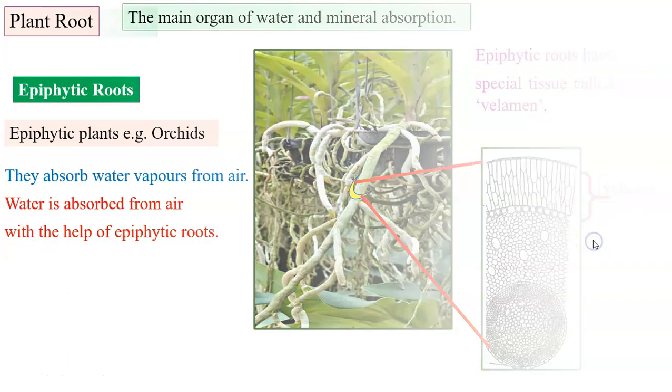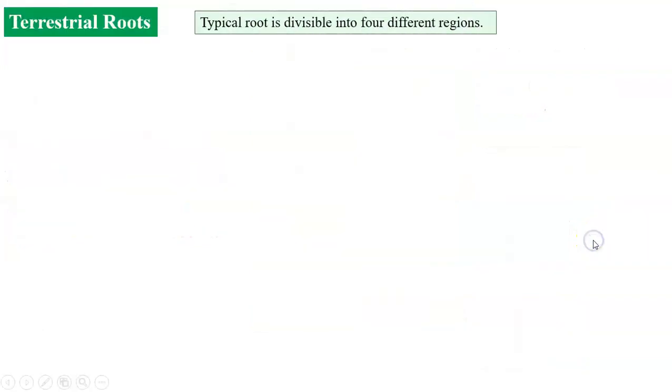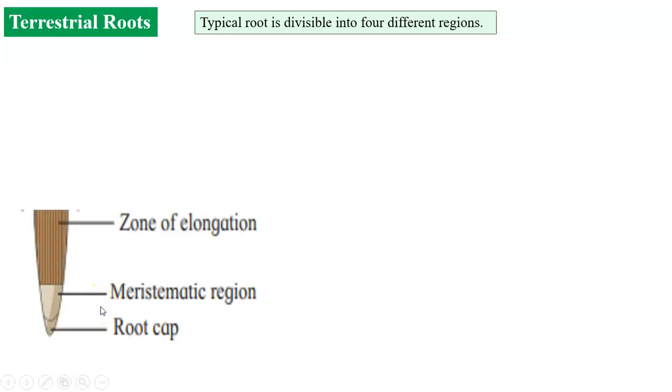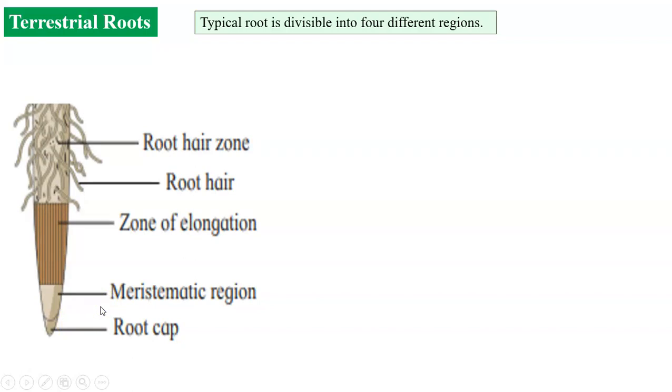In terrestrial plants the roots typically show four regions. The region towards the apex or free end is meristematic region or growing tip region covered by root cap. Behind that there is zone of elongation followed by root hair zone and then at the base there is maturation zone.